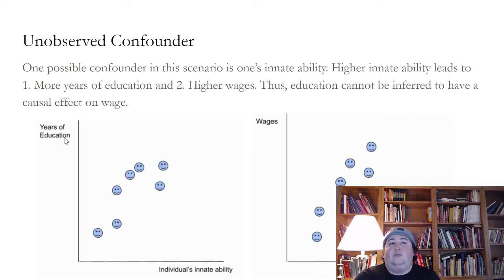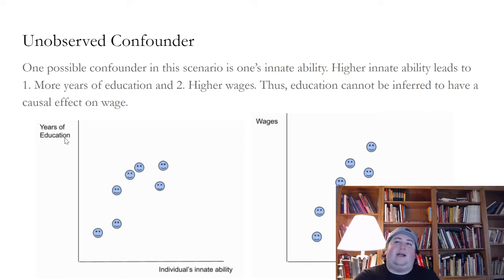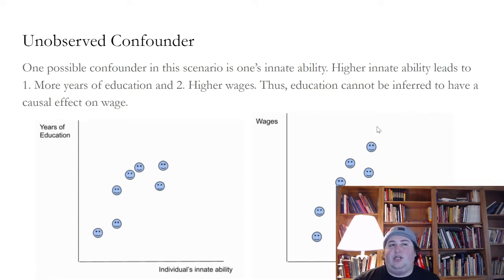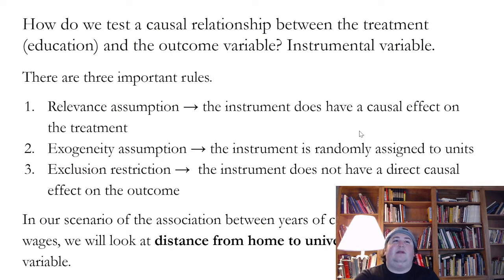Higher innate ability leads to more years of education and to higher wages — by higher innate ability, I mean higher academic innate ability, as there are lots of different types of abilities. Thus education cannot be inferred to have a causal effect on wages. An individual's innate academic ability leads to both more years of education and higher wages. So how do we test the causal relationship between the treatment, education, and the outcome variable? The answer is an instrumental variable.